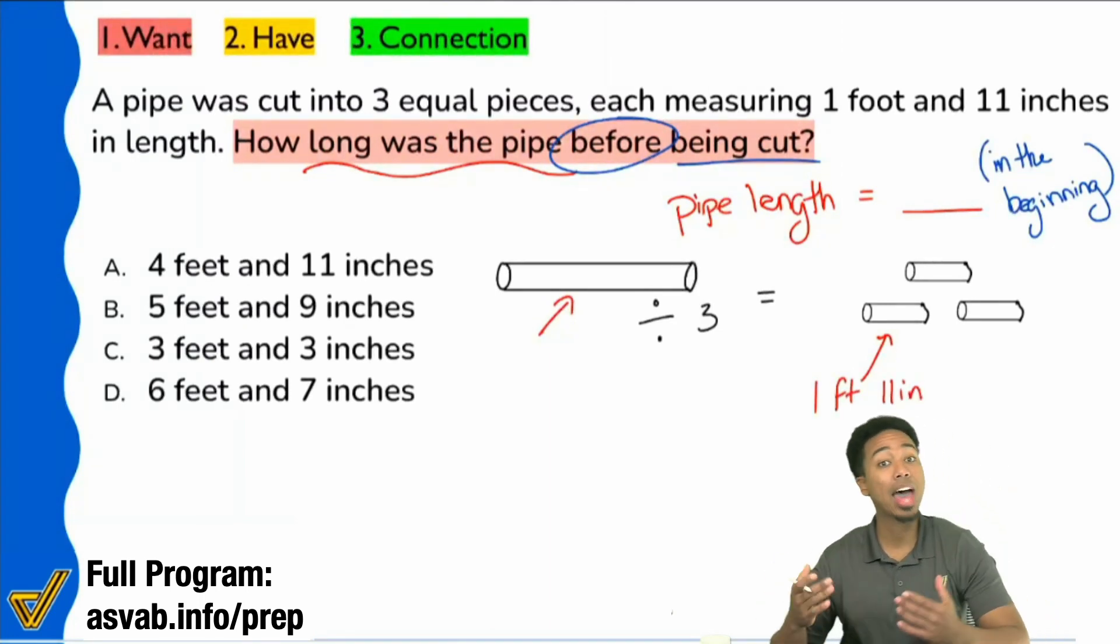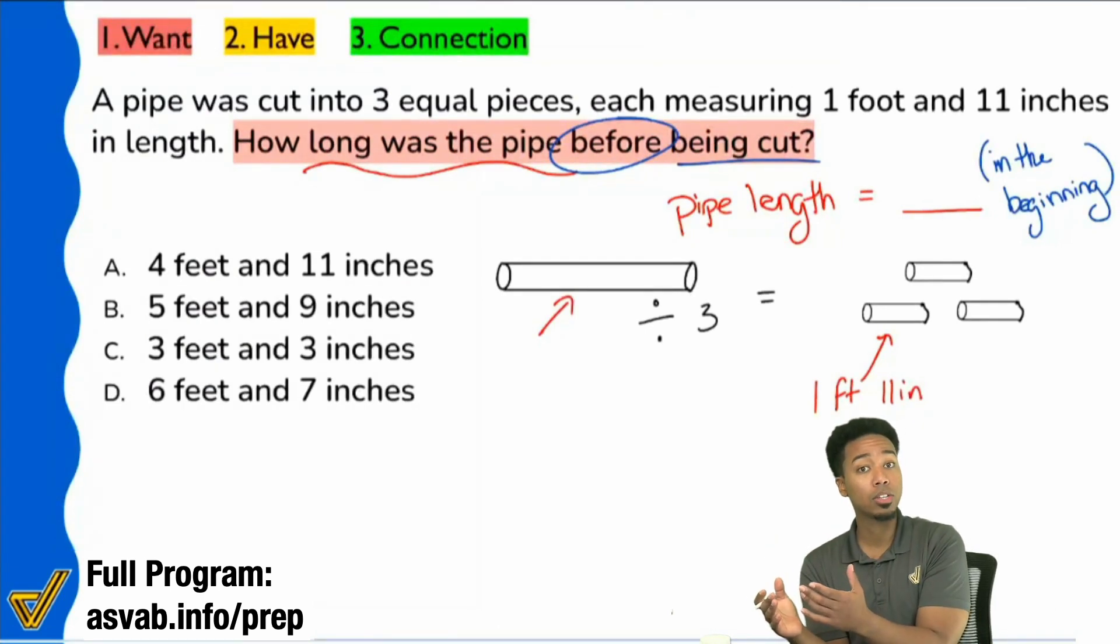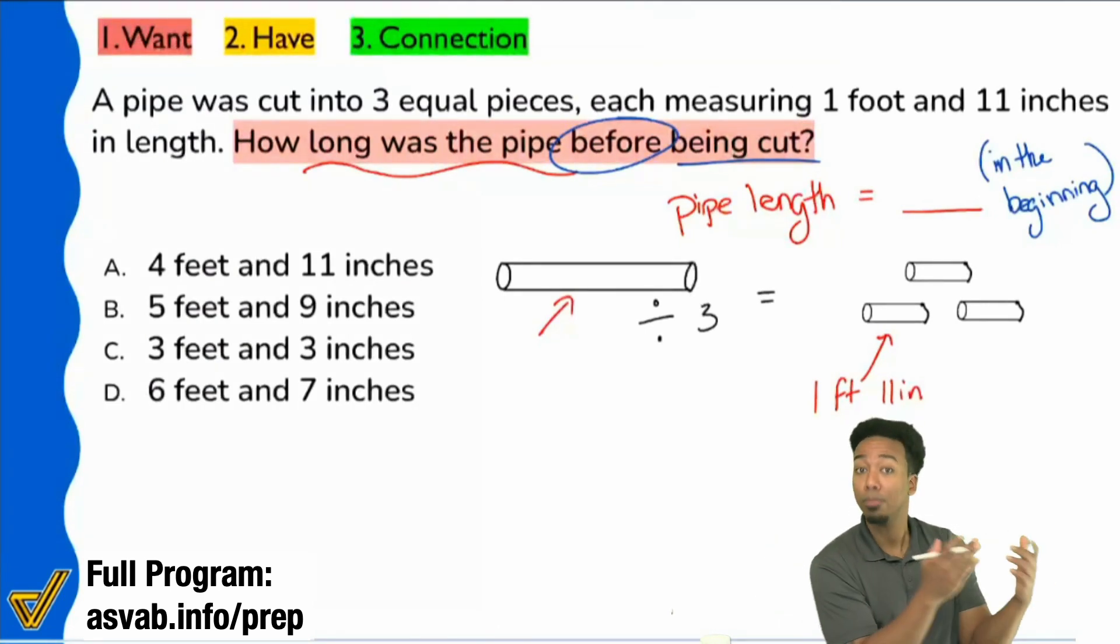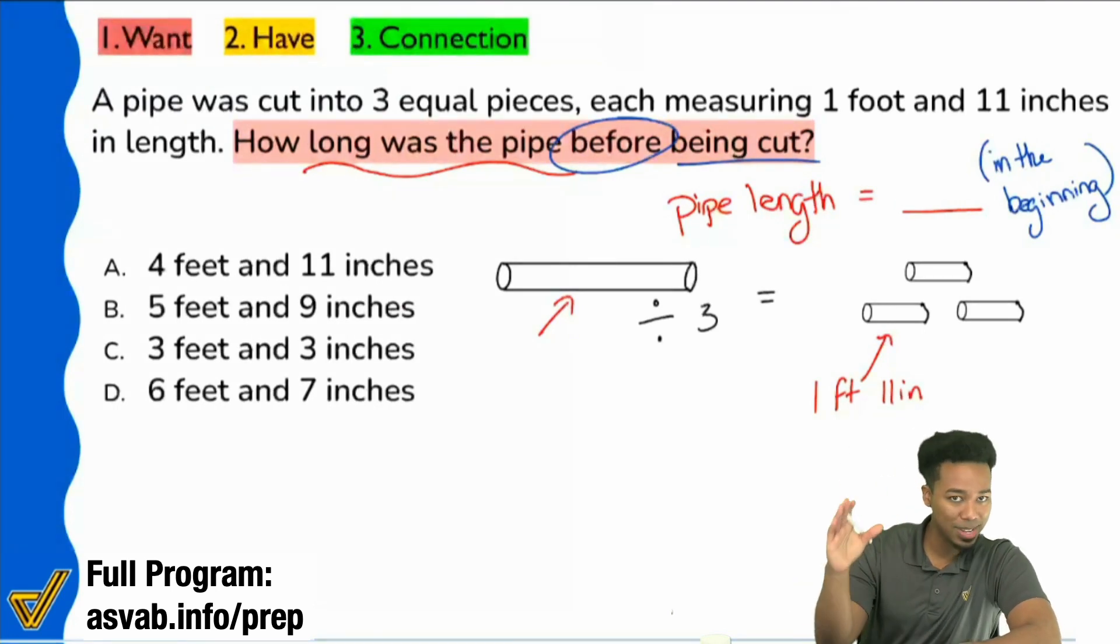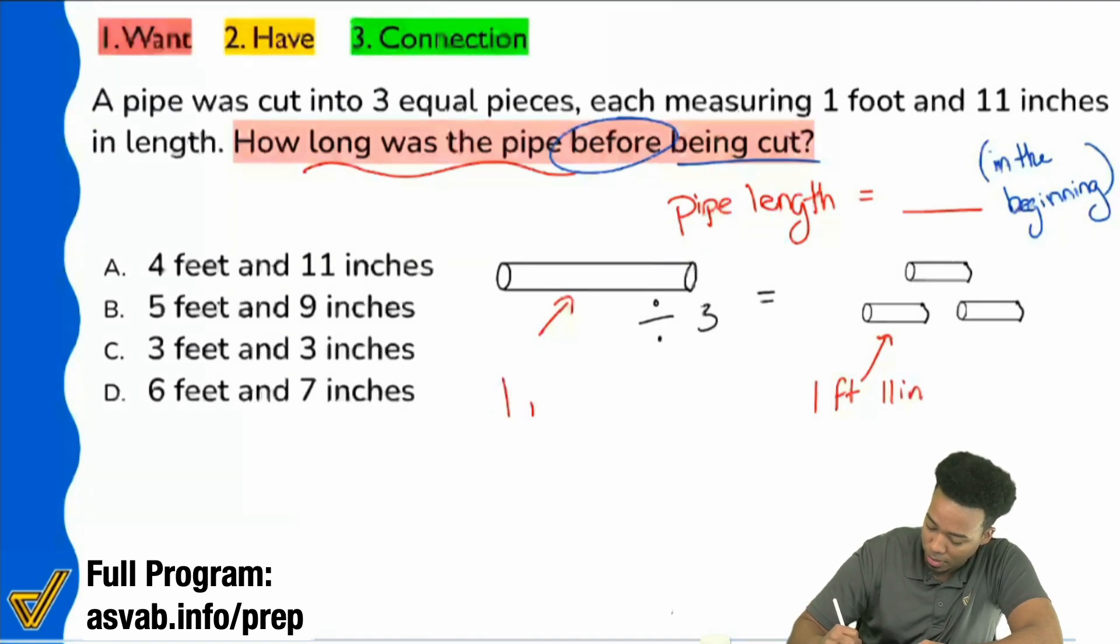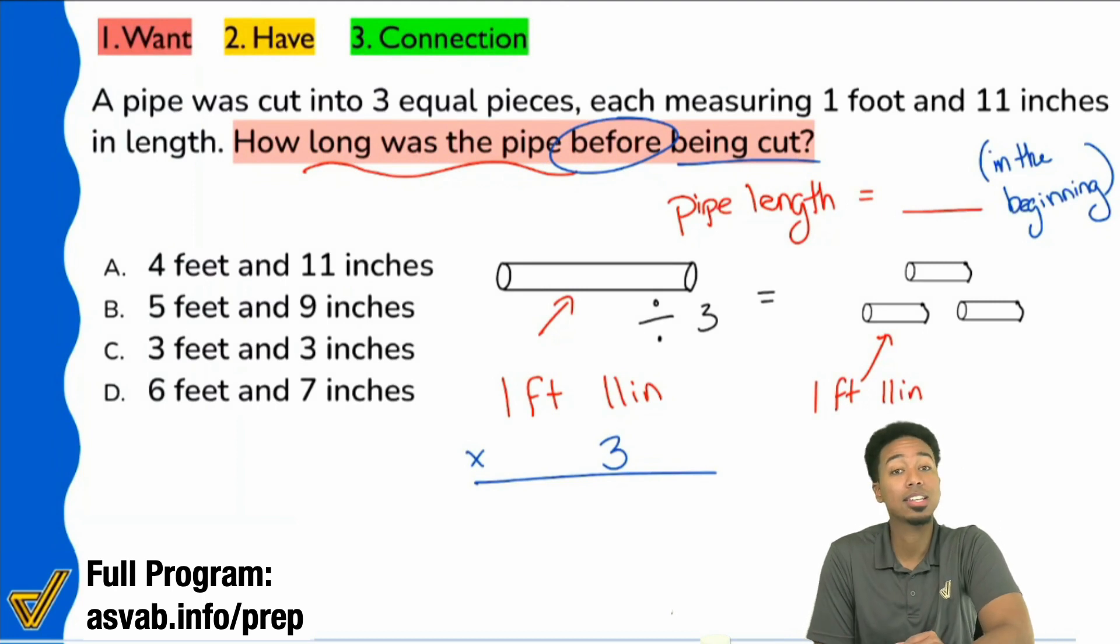We could add all three of them back up - one foot 11 inches plus one foot 11 inches plus one foot 11 inches. We could absolutely do that, but that's literally multiplication - adding the same thing by itself three times is multiplication. So does it make sense that to get the final answer we need to take one foot 11 inches and multiply it by three?